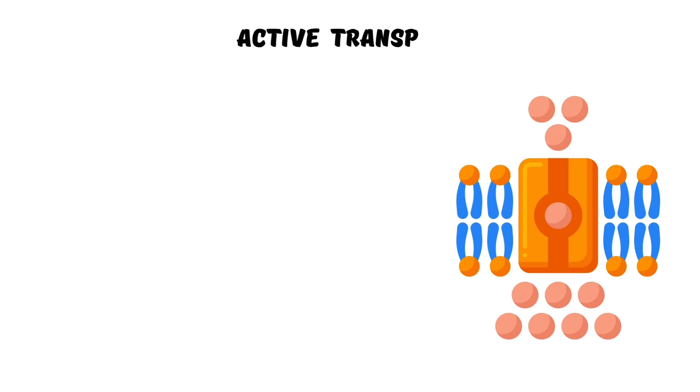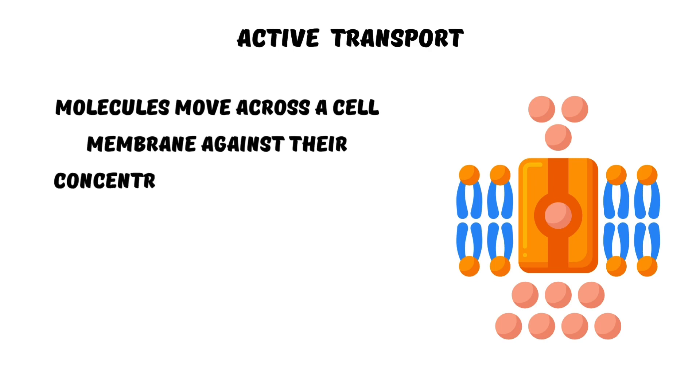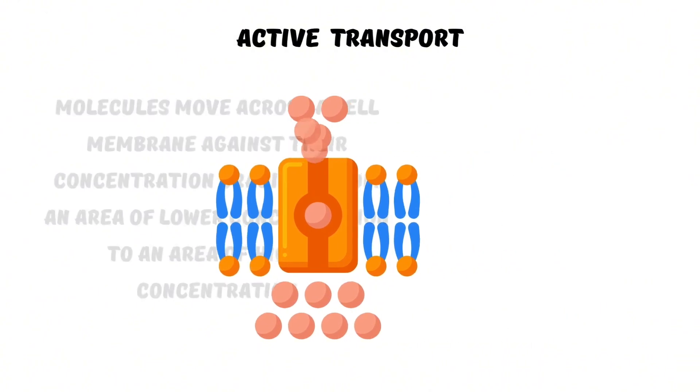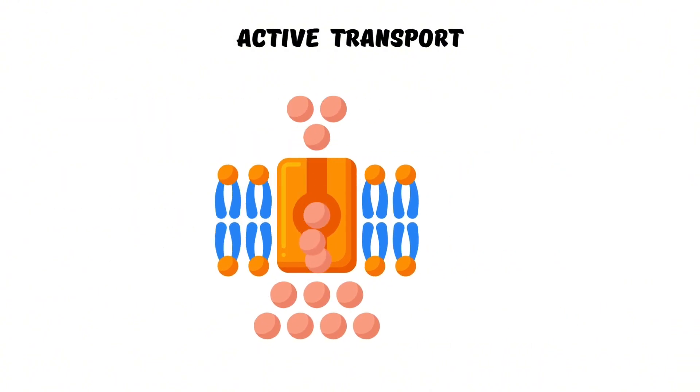Active transport is a process in which molecules move across a cell membrane from an area of lower concentration to an area of higher concentration. This process requires energy in the form of adenosine triphosphate ATP and is performed by specific carrier proteins embedded in the cell membrane.